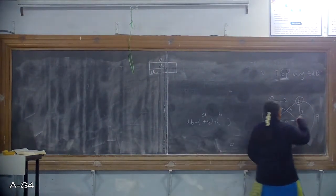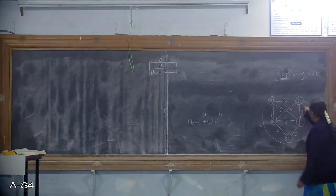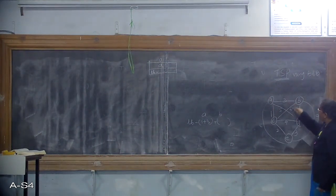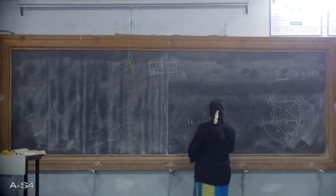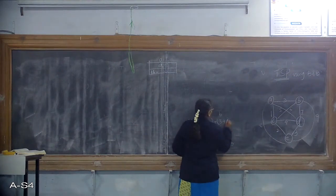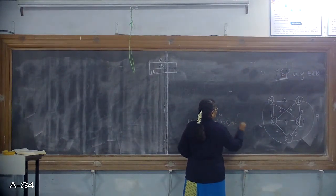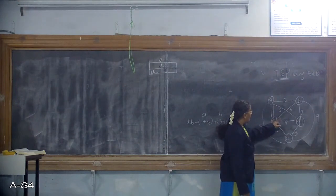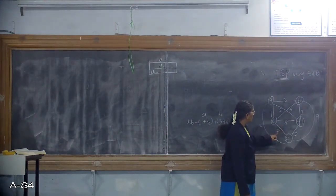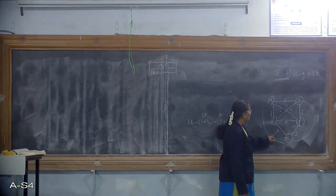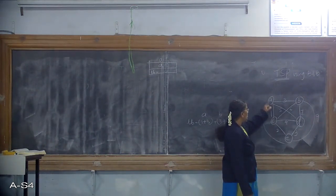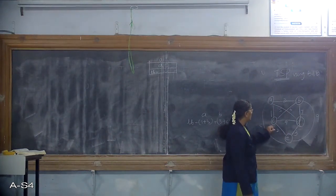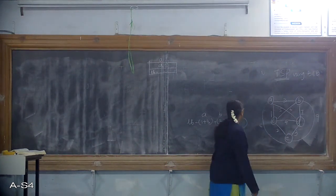For B also, from B the two least cost values are 3 and 6. From C, there are 4 paths with costs 1, 5, 4, and 2. The two least cost paths are 1 and 2, towards A and towards E with costs 1 and 2.